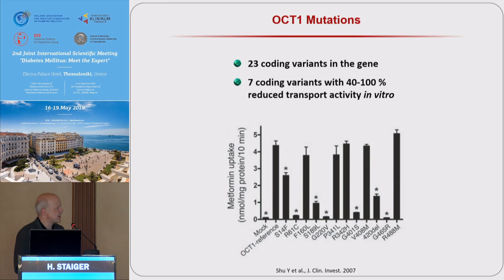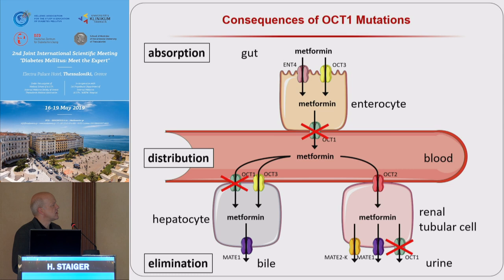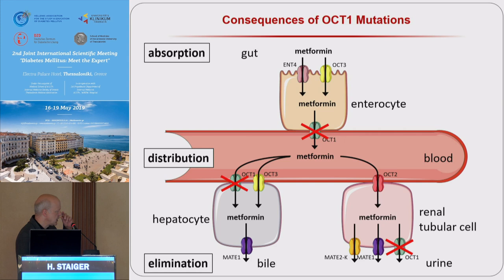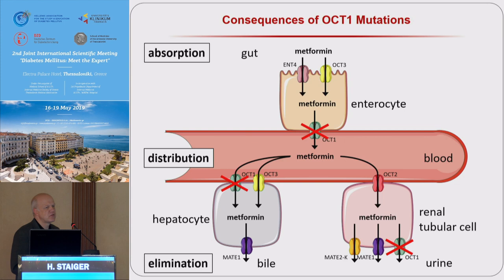What would be the consequences of this impaired transport? Mainly, the release into the bloodstream is blocked. The blockade of the uptake of metformin into hepatocytes and the blockade of the release into the urine are of only minor importance. But we should have an accumulation of metformin in enterocytes and probably also an increase in metformin concentration in the gut, probably contributing to the gastrointestinal side effects of the drug, such as diarrhea, spasms, nausea, and vomiting.